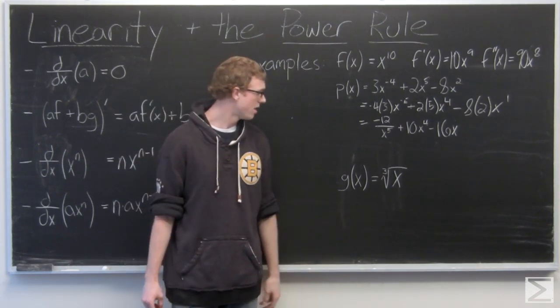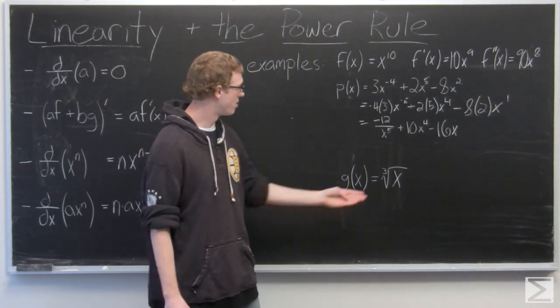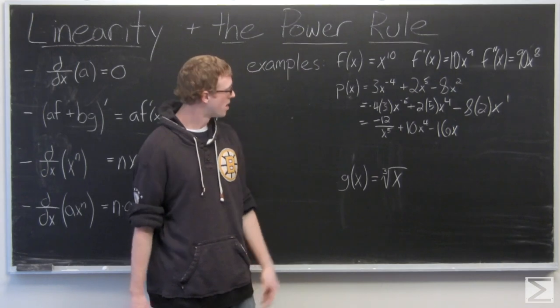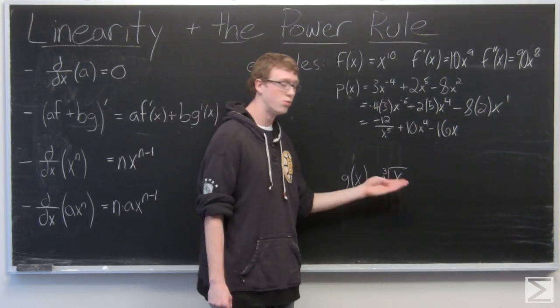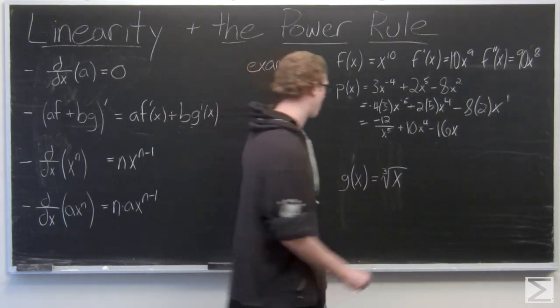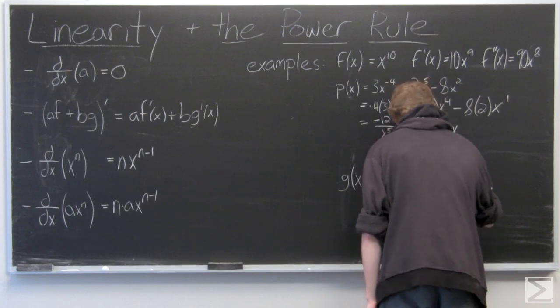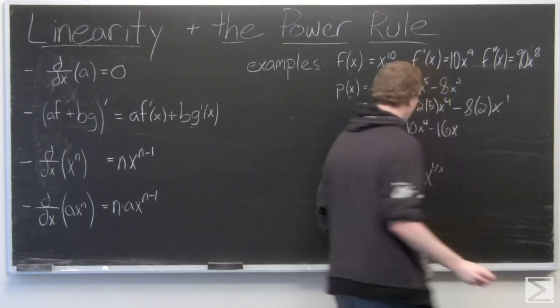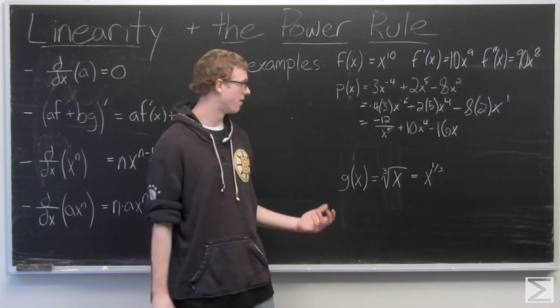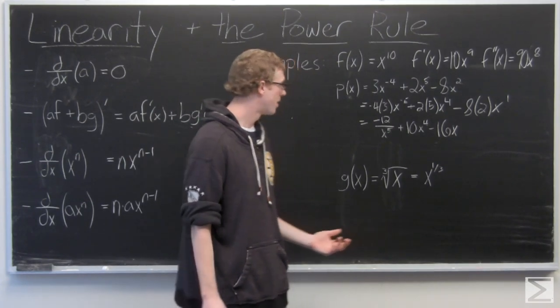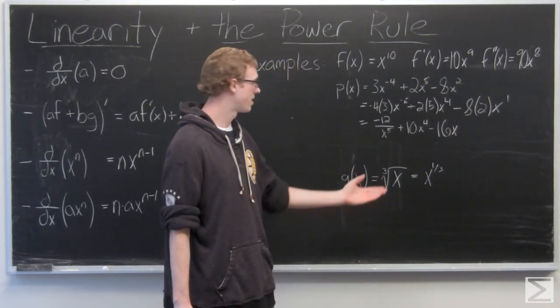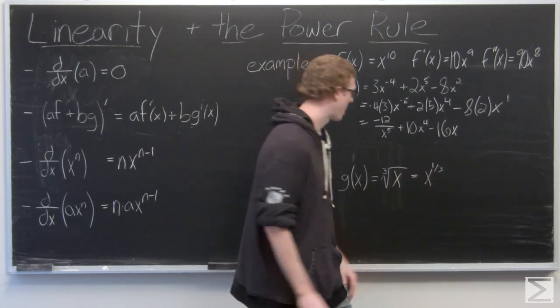So another nice thing about using the power rule is we can switch functions with radicals in them. So we know that the cube root of x is equal to x to the 1 third. Now sometimes these functions can get a little bit messy to work with. But we're just going to treat this normally as we would using the power rule.